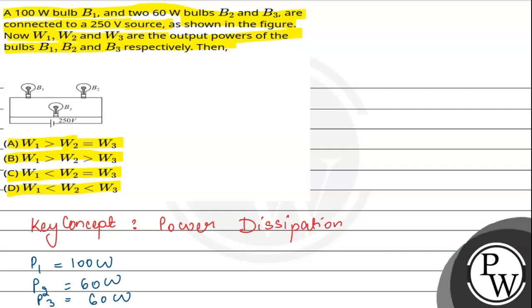W1, W2 and W3 are the output powers of the three bulbs respectively. We have to tell the relation.